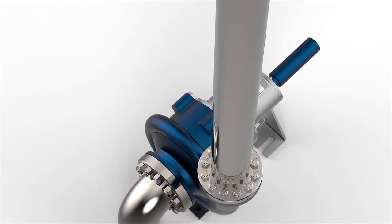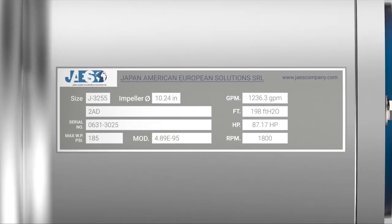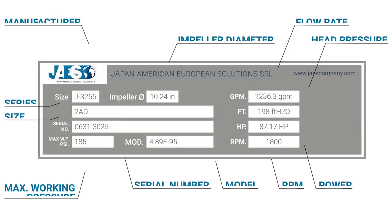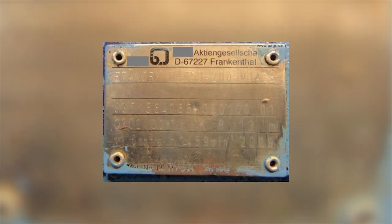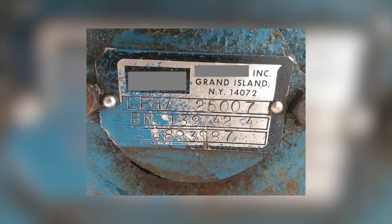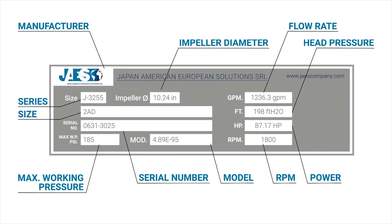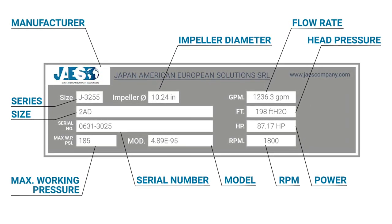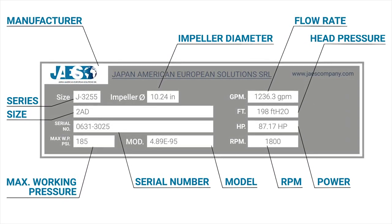Every centrifugal pump has a nameplate like this one, which lists some of the most important data. Unfortunately, these nameplates sometimes become faded, damaged, and illegible over time, so some very important technical data may be missing. Luckily, some formulas can be used to calculate and obtain this missing data.